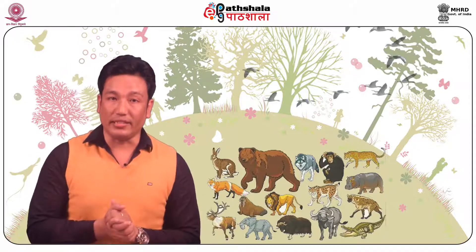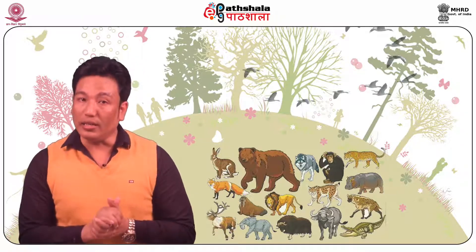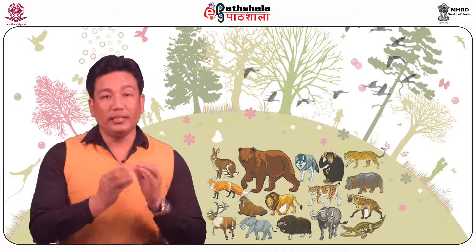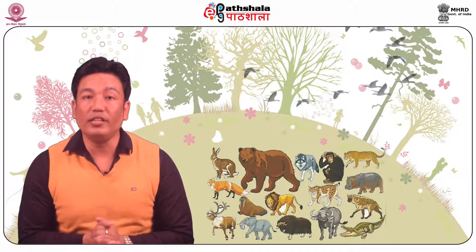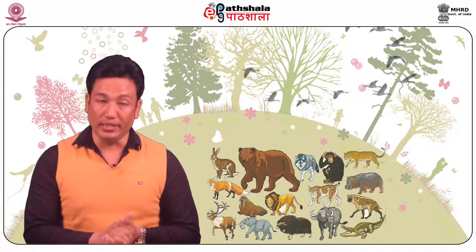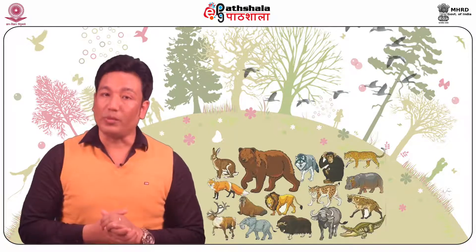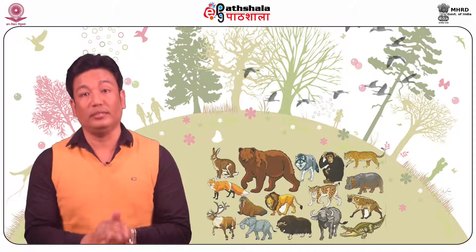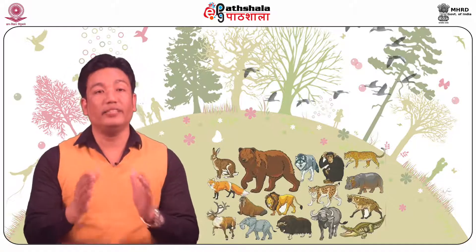Other types of interactions where one population is positively affected at the expense of another population is called predation, as seen in figure 1. It is designated as positive-negative. Predation is possible in forms of herbivory, cannibalism, parasitism and parasitoidism. Finally, the type of interaction where both the interacting populations are negatively affected is called competition, which can be intra- or interspecific and designated as negative-negative.